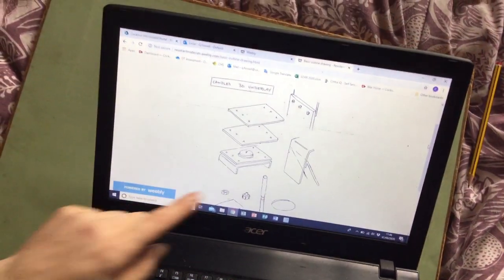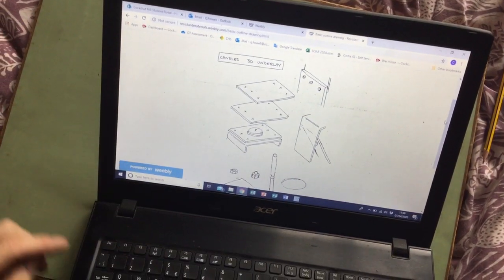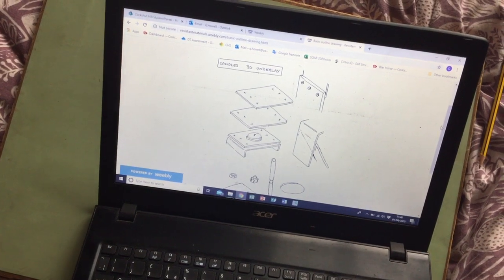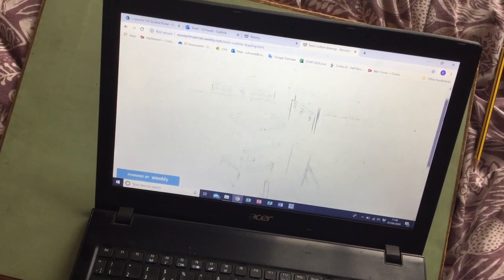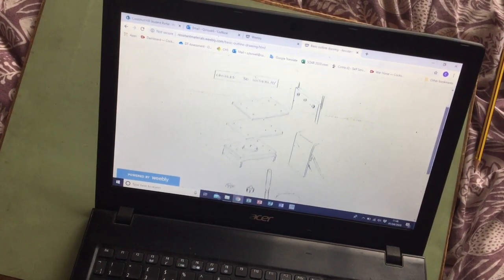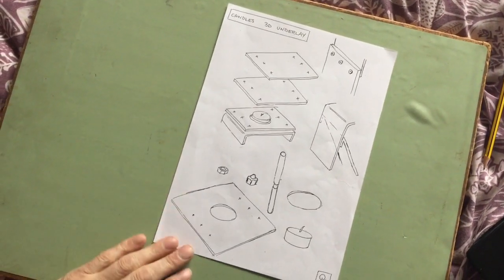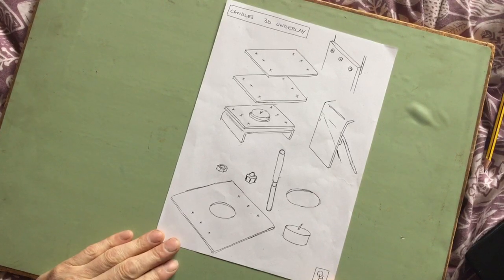From the website you're going to need to download a copy of this sheet and this sheet is on the resistant materials website and the link is in the documentation. Once you've got your copy it will look a little bit like this.